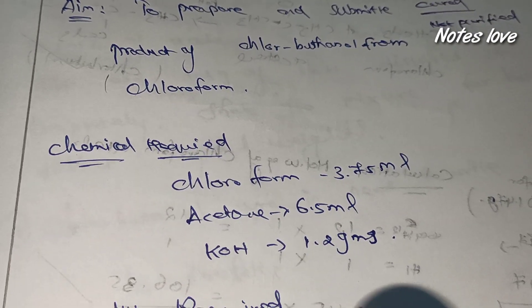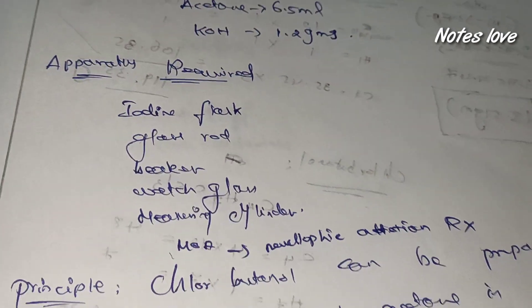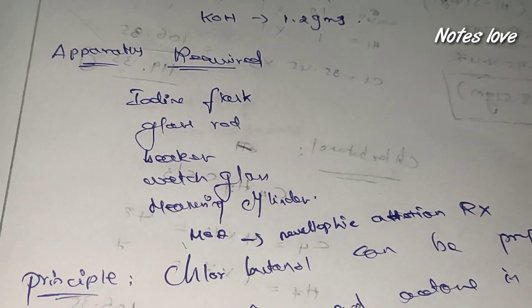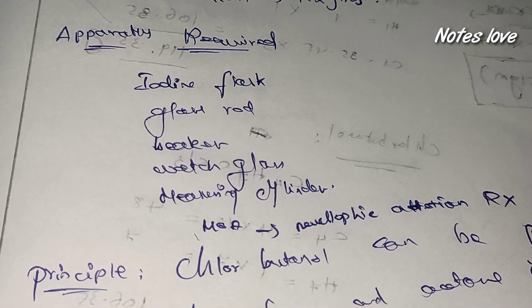What are the chemicals we need? Chloroform 3.75 ml, acetone 6.5 ml, and potassium hydroxide. What are the apparatus? Iodine flask, glass rod, beaker, watch glass, and measuring cylinder.